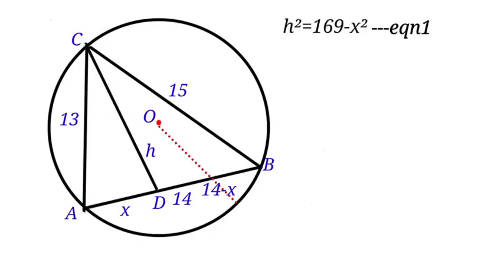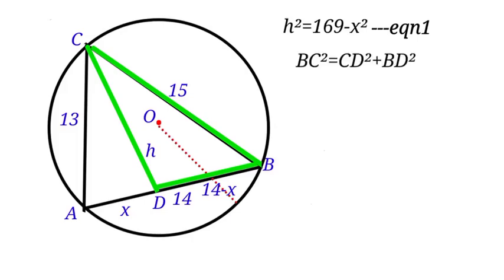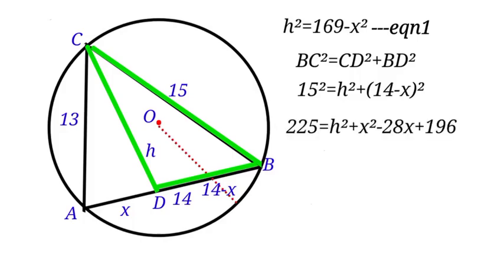Similarly, let us also use Pythagoras theorem to find the height of triangle DCB. For triangle DCB, we will have BC squared equals CD squared plus BD squared. When we substitute the values, we have 15 squared equals H squared plus the bracket of 14 minus X squared. When we solve for that, we have 225 equals H squared plus X squared minus 28X plus 196.